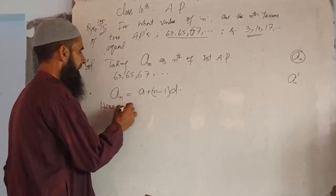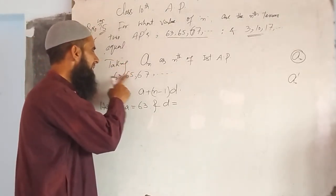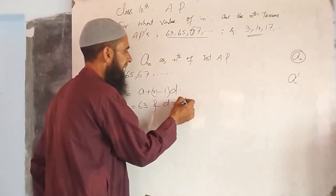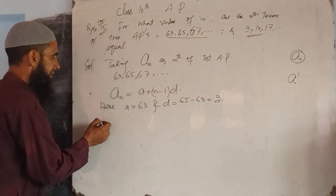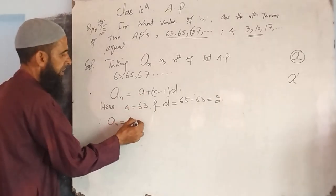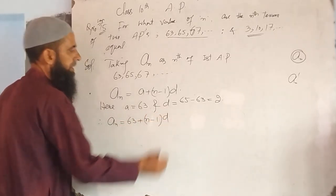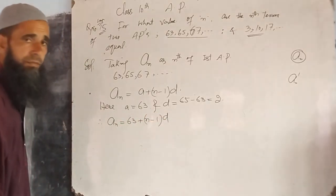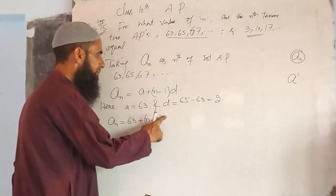A is equal to 63. And D is equal to — common difference of any two consecutive terms. Taking second term minus first term: 65 minus 63, that is equal to 2. Therefore, An = 63 plus n minus 1 into D, where D is 2.